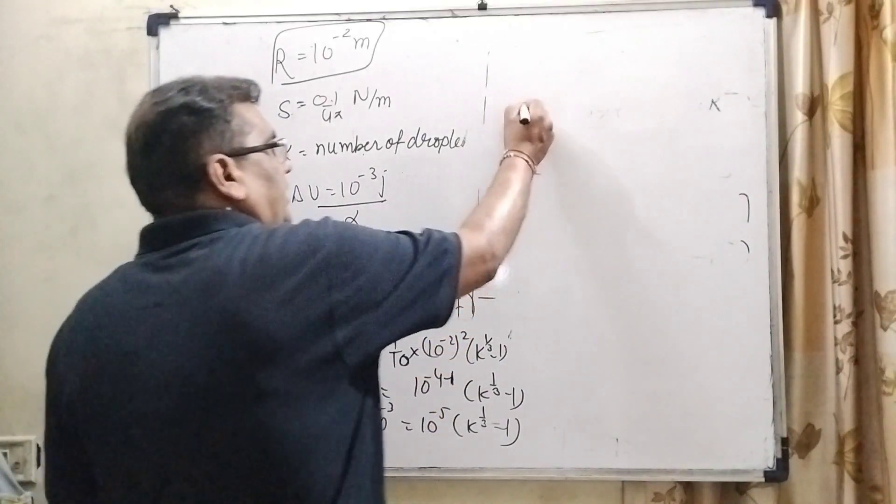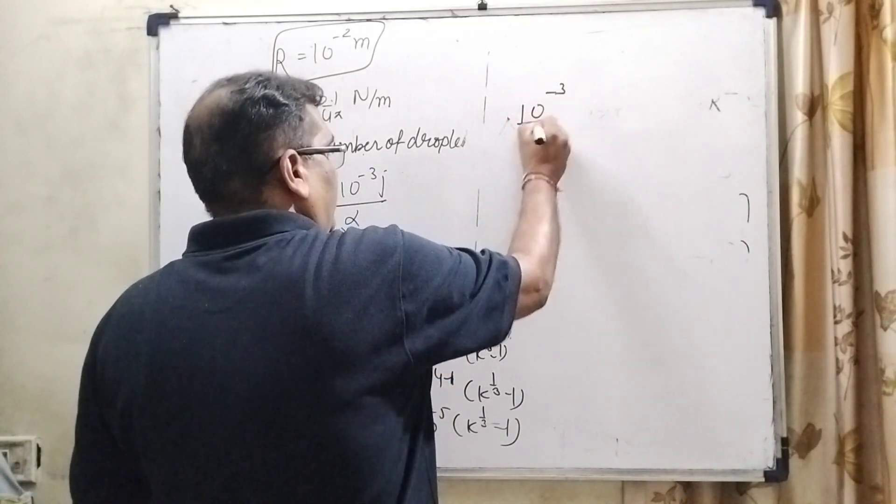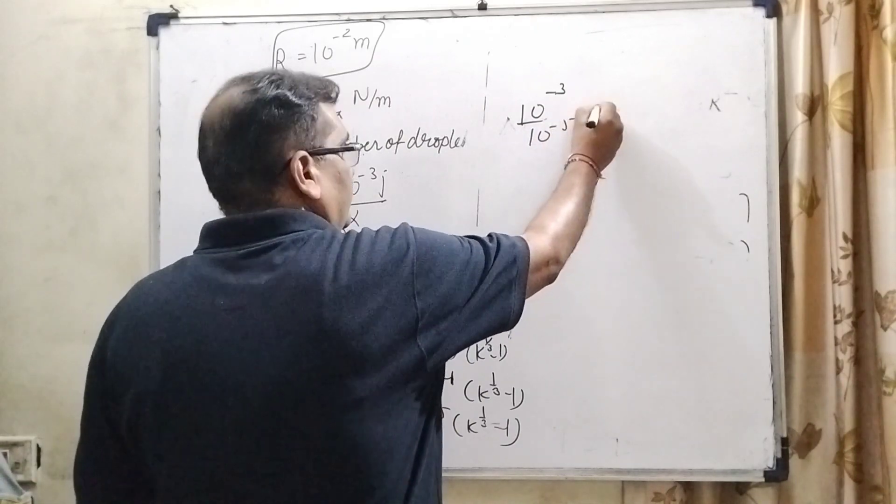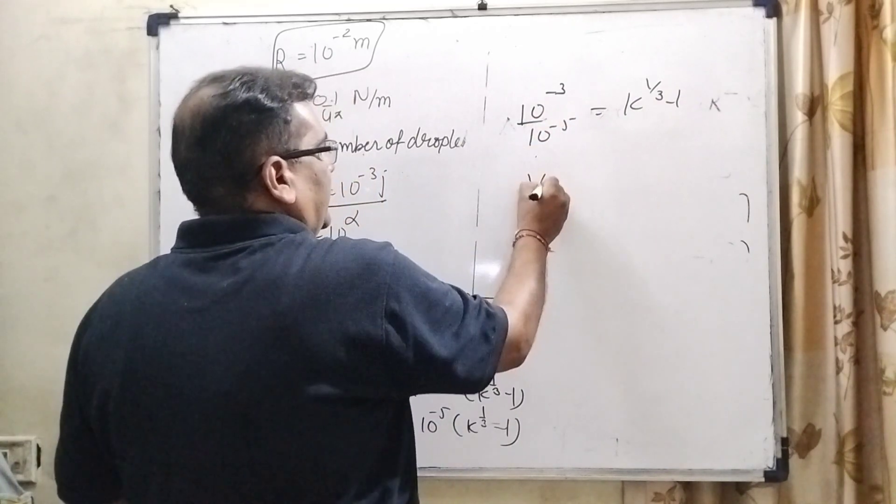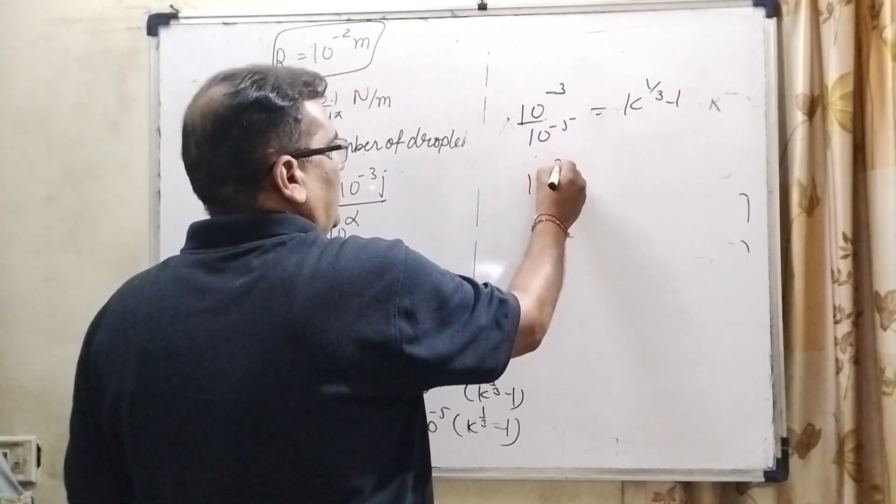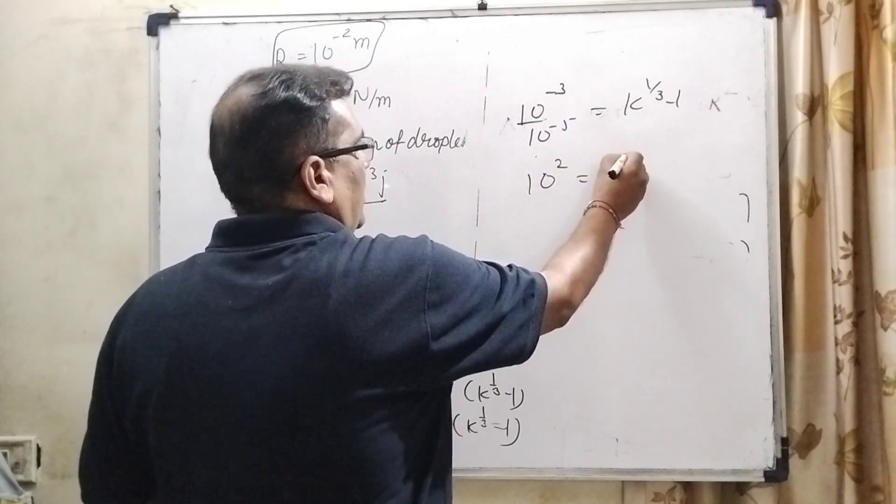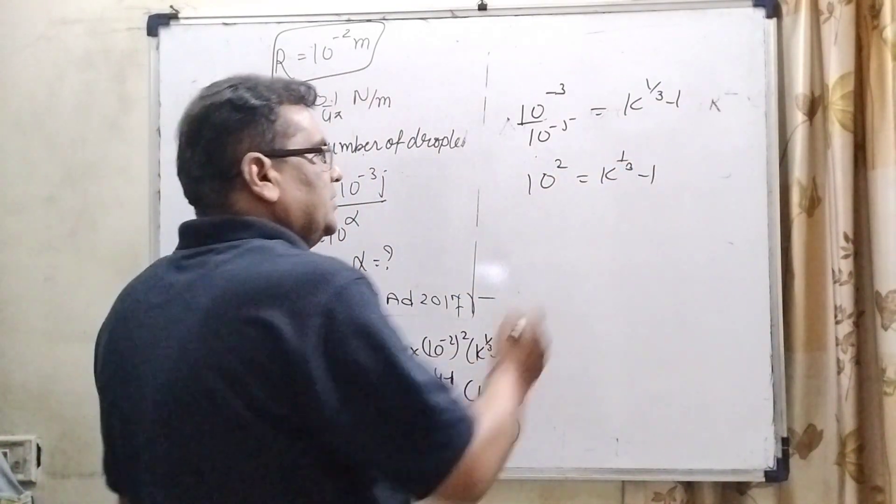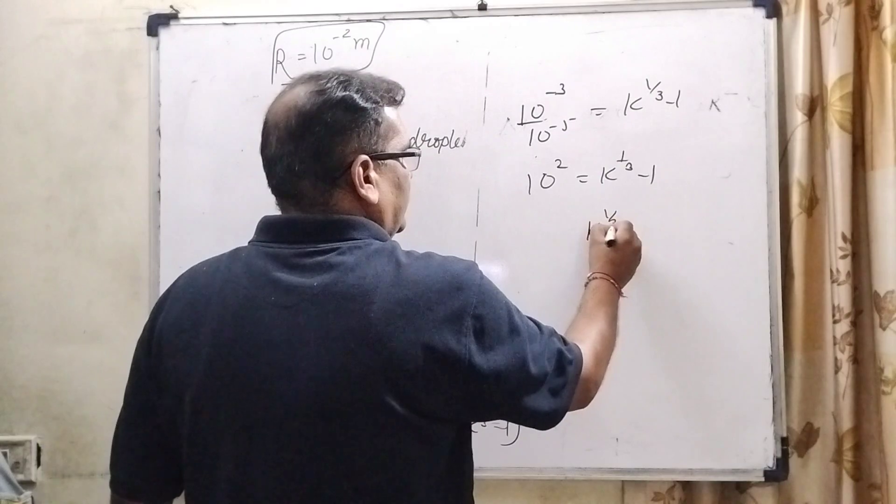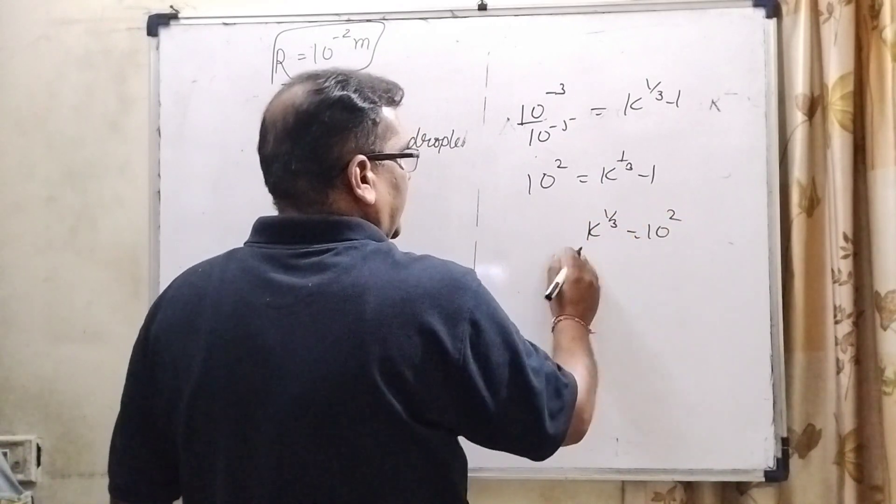Now, it can be written as 10 raised to power minus 3 upon 10 raised to power minus 5 equal to k raised to power 1 by 3 minus 1. Now, it can be written as 10 raised to power 2 equal to k raised to power 1 by 3 minus 1. Minus 1 can be neglected. So therefore, k raised to power 1 by 3 equal to 10 raised to power 2. Then, applying the cubes both the sides, then it becomes 10 raised to power 6.